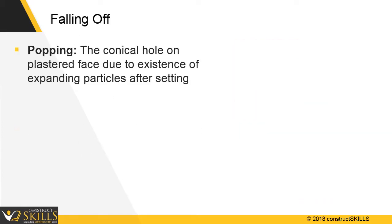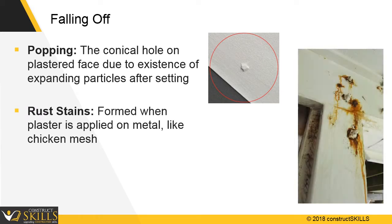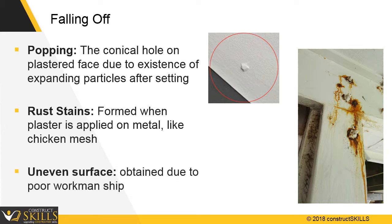The conical hole on the plastered face due to existence of expanding particles after setting is called popping. Rusted stains appear when the plaster is applied on metal, like chicken mesh. To get a finished surface, the workmanship should be proper, or else an uneven surface will be seen.